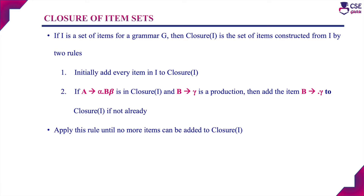The augmented grammar was already discussed in the previous session. Now we will discuss the second step to construct the canonical collection of LR(0) items — that is, closure of item set. An item is nothing but adding a dot in the right-hand side of the production. If I is a set of items for a grammar G, then closure of I is the set of items constructed from I with the help of two rules.